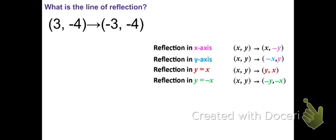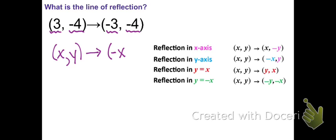How about this one? The y-coordinate stayed the same — it's negative 4 in both. But the x-coordinate was positive, and now it's negative. So (x, y) changed in that the x-coordinate became its opposite sign, while the y-coordinate stayed the same. Looking at the rules, this point was reflected over the y-axis.